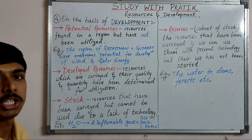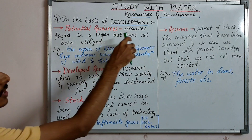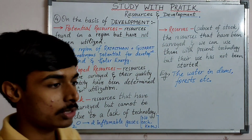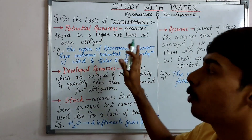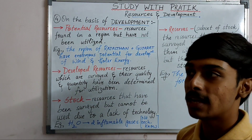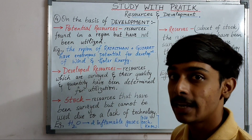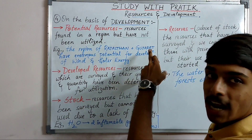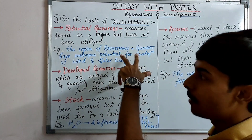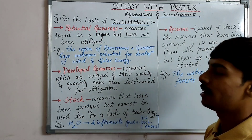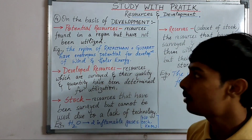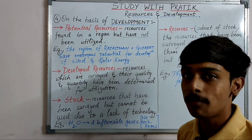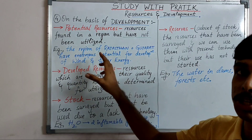Potential resources are resources found in a region but have not yet been utilized — their consumption has not yet happened. For example, the regions of Rajasthan and Gujarat have enormous potential for development of wind and solar energy, but we have not fully utilized them yet due to some loopholes.